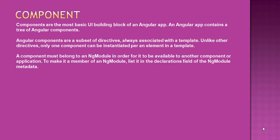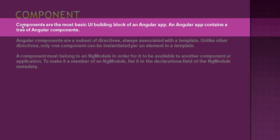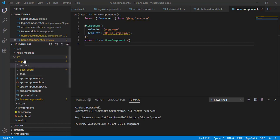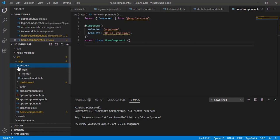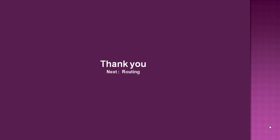So now we have created all the components required for our to-do application. Coming back to the definition: components are the most basic UI building blocks of an Angular app, and an Angular app contains a tree of Angular components. Under the app folder, we can see our app component as the root component, and we have the login component, register component, dashboard component, and to-do component — it's a tree structure of components. That's all for components. In the next video, we will add navigation for our to-do and dashboard, and we will add routing for our application. Thank you for watching.